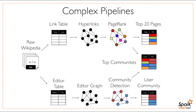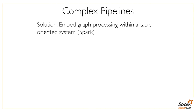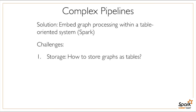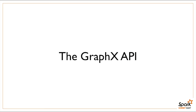Notice that these pipelines involve treating the same data—this Wikipedia-based data—as both tables and graphs. Our solution, proposed in the research paper, was to embed this graph processing problem within a table-oriented system like Spark. That brings up its own challenges: how do you represent graphs in a table system, how do you express graph algorithms as standard Spark operators, and how do you present these views coherently to the user? GraphX was built to solve these challenges—to let you express graph computation easily, support all kinds of graphs efficiently, and integrate into larger Spark-based pipelines.